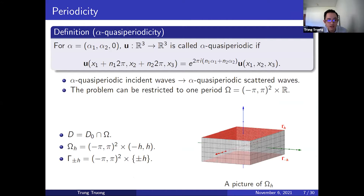For the periodic setup, we need to define alpha-quasi periodicity, and this is the definition.